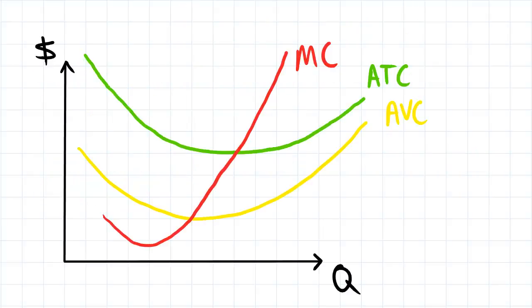So when we make a decision like do we shut down or not, we would actually want to look at economic profit. The cost curves that we use in determining whether or not the shutdown condition applies would be constructed to include opportunity cost, and so we would shut down in the long term.